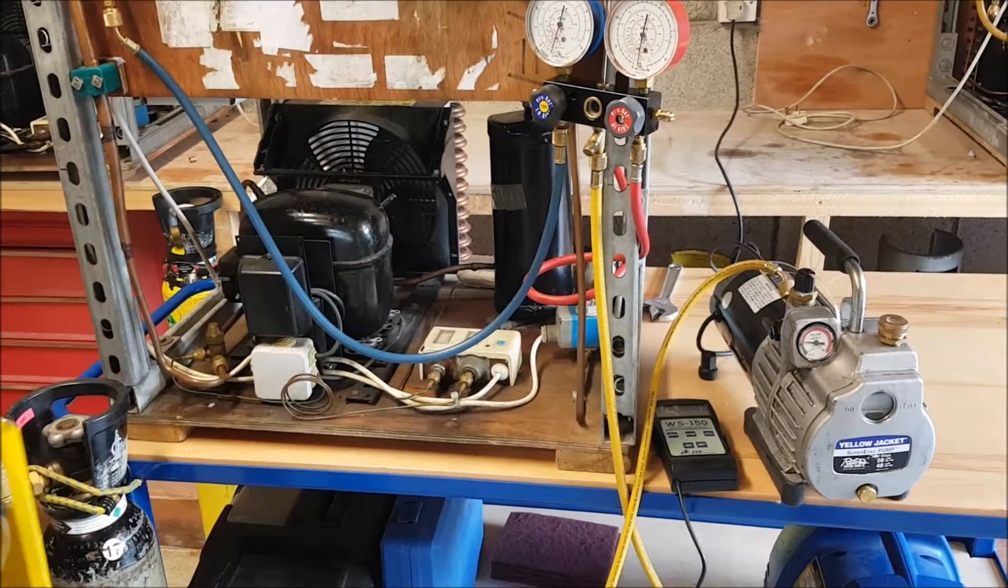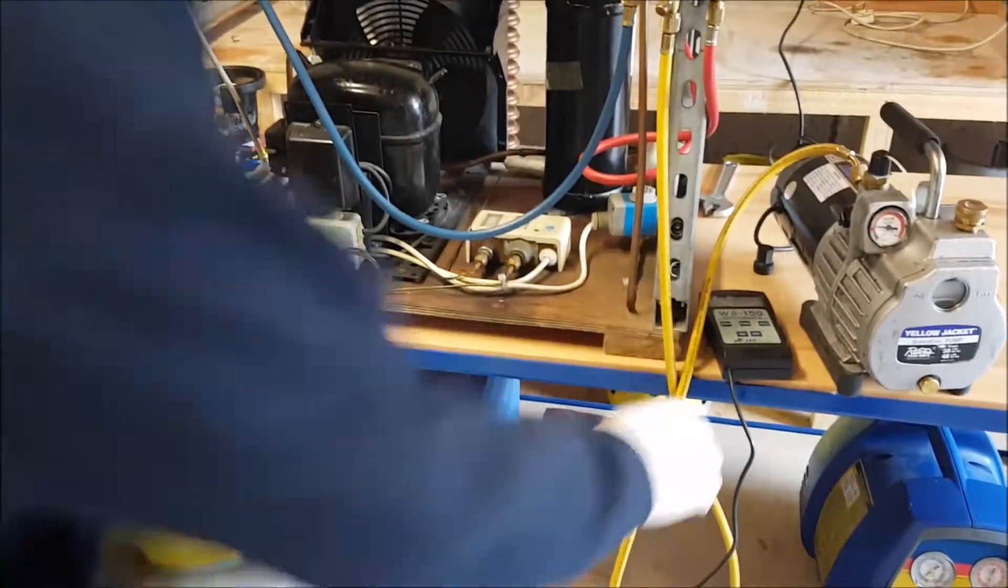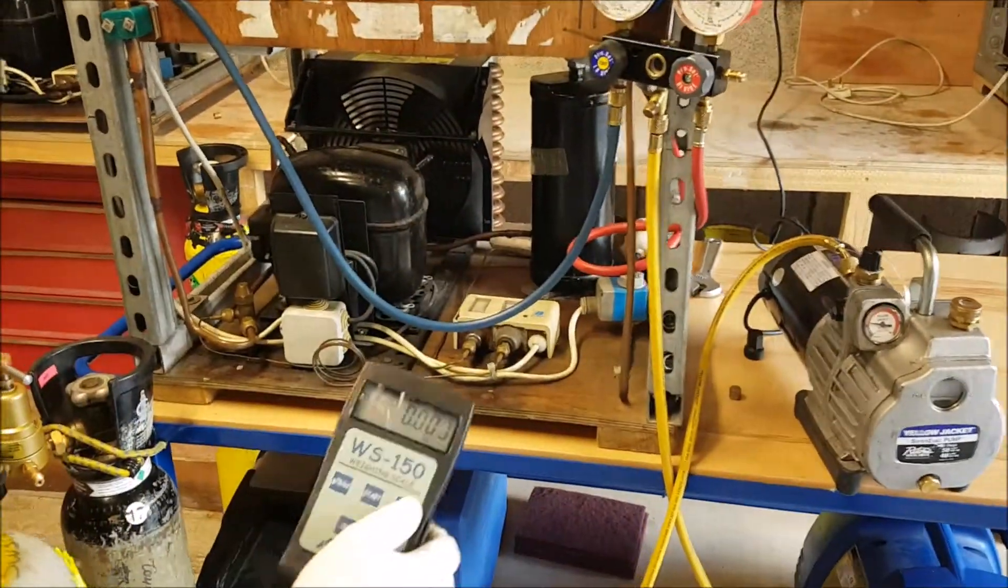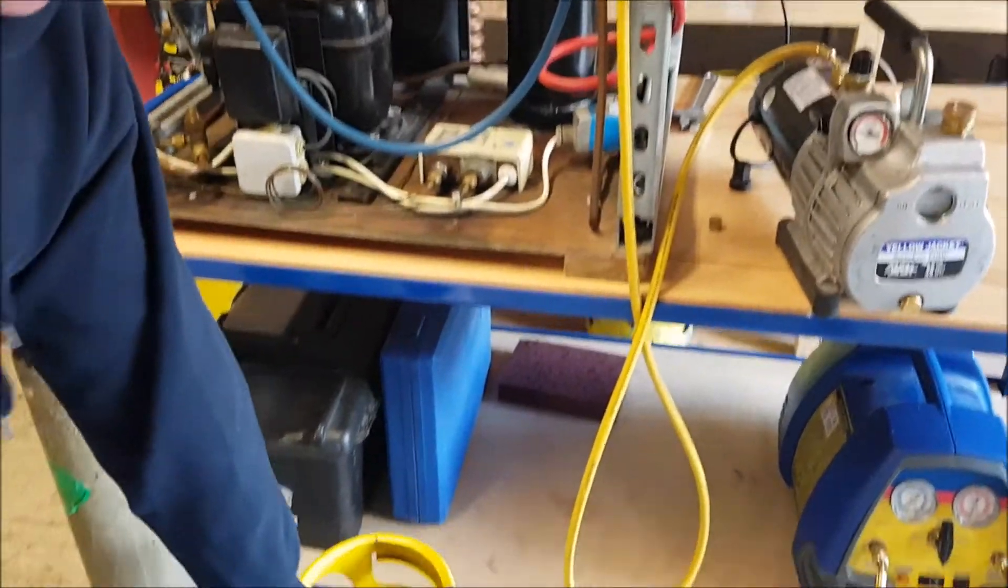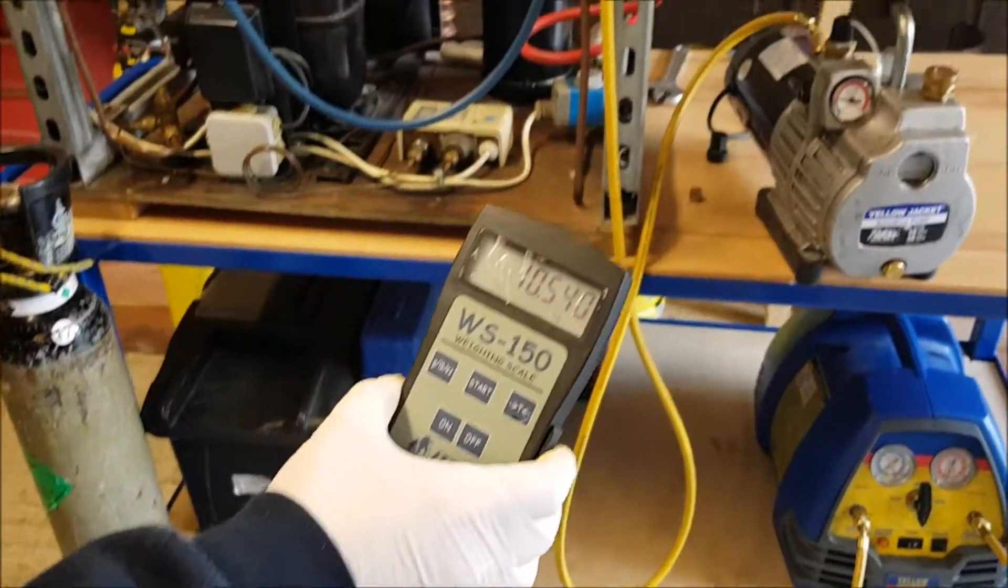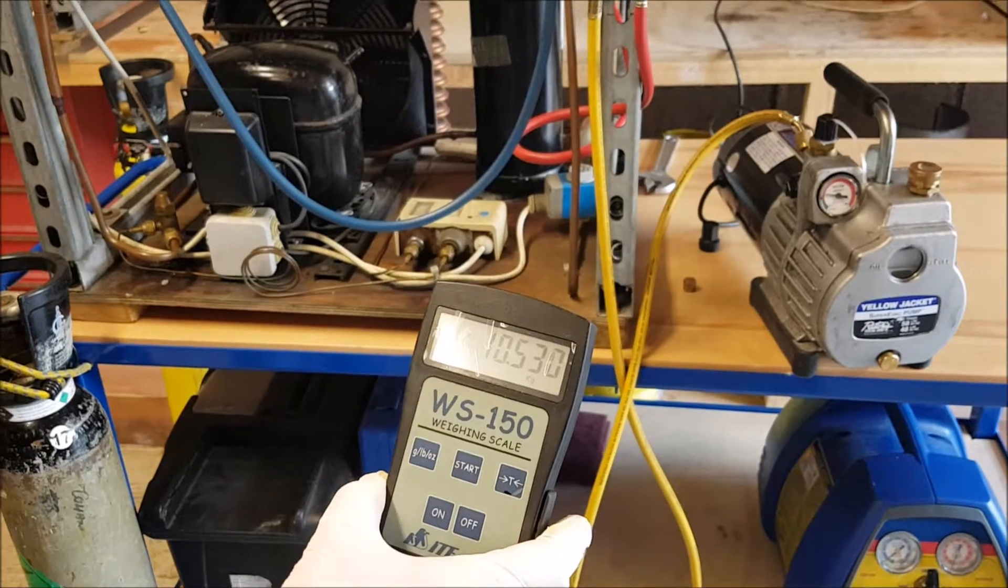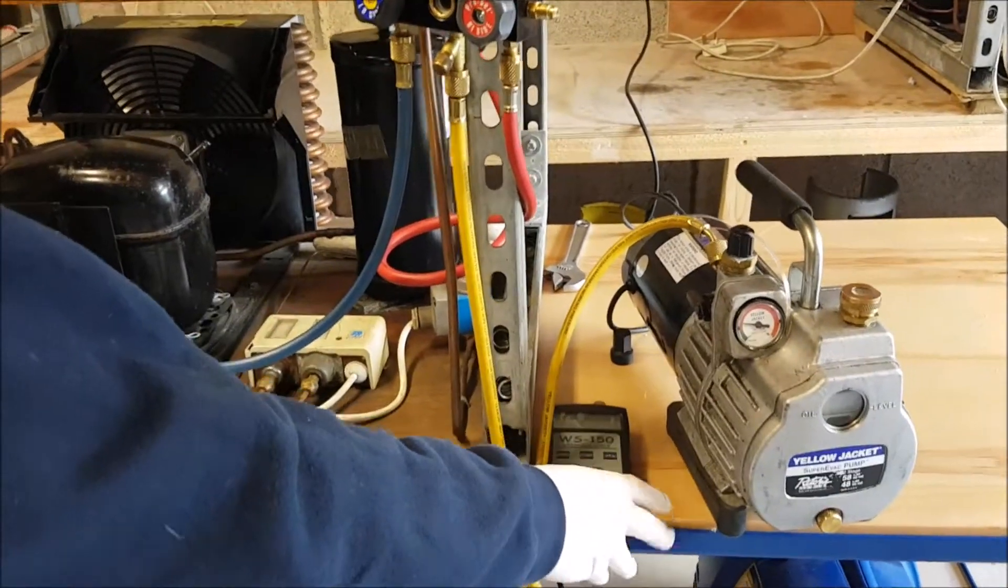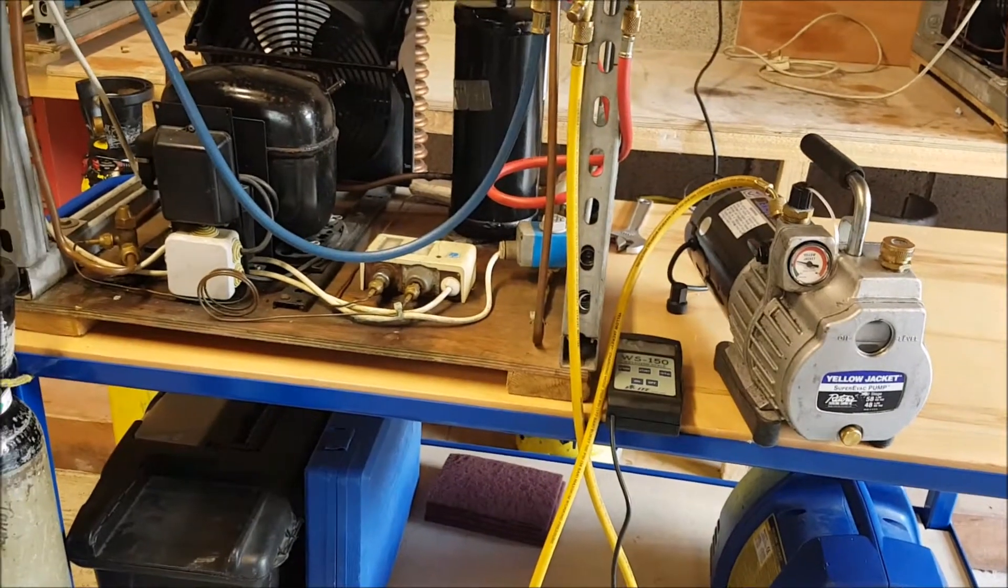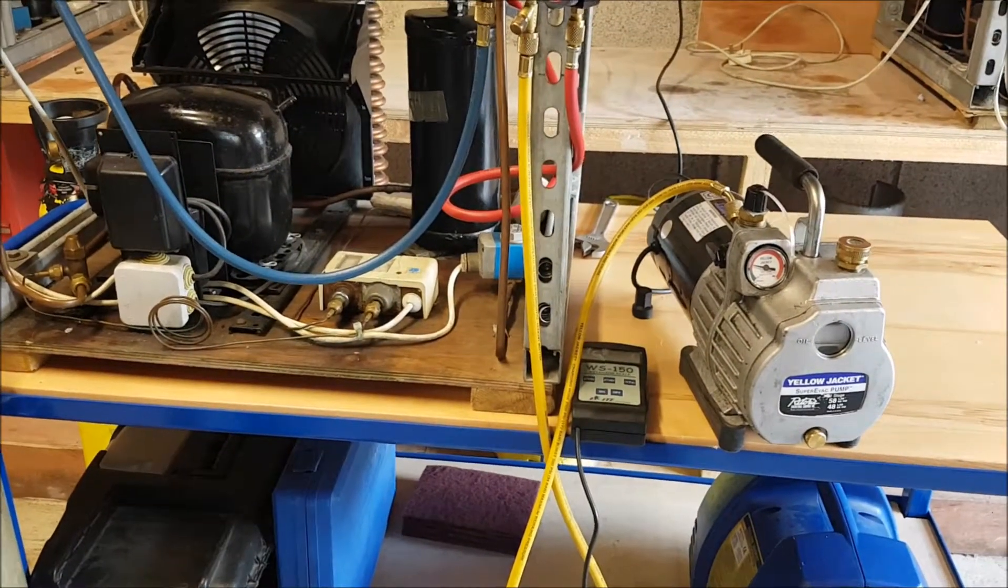We have our weighing scales here. We make sure before we put the bottle on that our weighing scales is at zero. You can see it's at zero. We put the bottle on and we can see how much refrigerant is in it. Our weight of the bottle is 10.53 kg, 10.54.